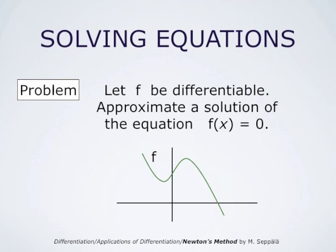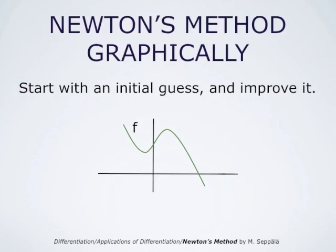The green curve is the graph of the function f. Newton's method starts with an initial guess x0, which is a negative number in this case. From x0 on the x-axis, we go to the point (x0, f(x0)) on the graph of f, and draw the tangent line at that point. This line intersects the x-axis at x1, which is our approximation of the solution — clearly much better than the initial guess x0.